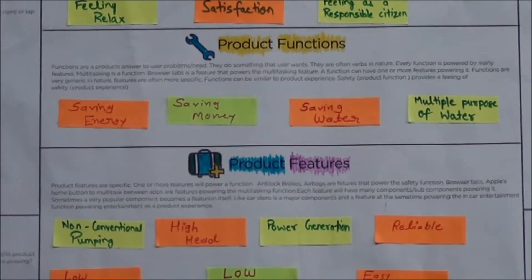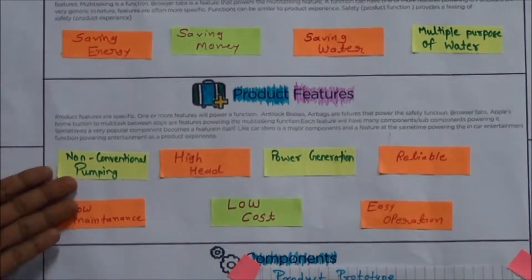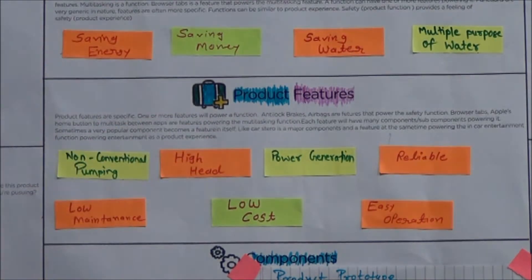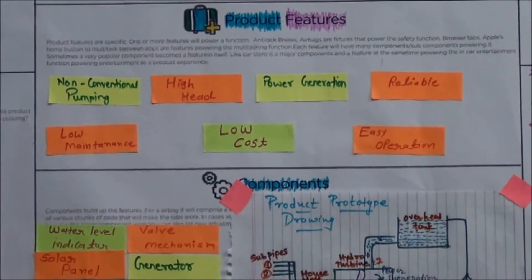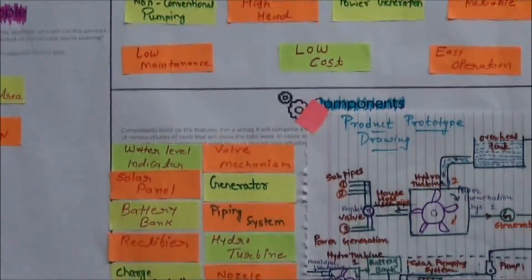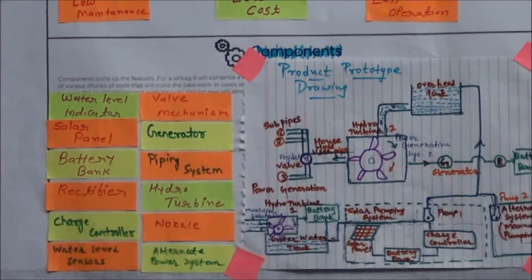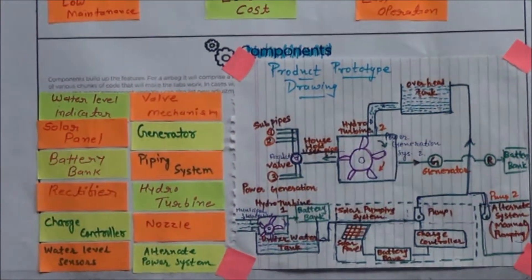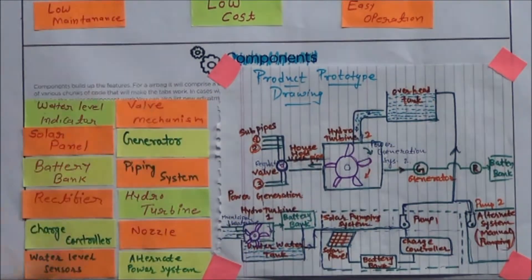The next division of this canvas is product features, which include non-conventional pumping, high power generation, reliability, low maintenance, low cost, and easy operation. The components our design includes are water turbines, generator, pipeline systems, bubble mechanism, battery banks, and rectifier — all components used to generate electricity or power from our arrangement of design components.